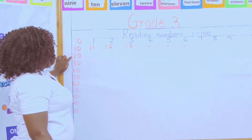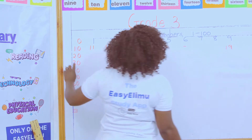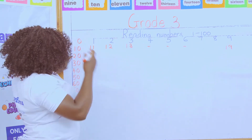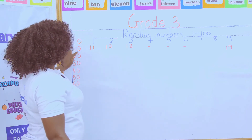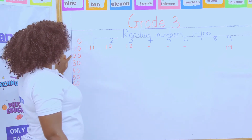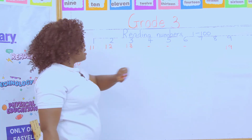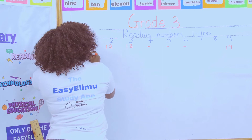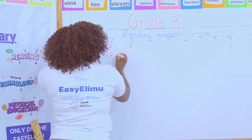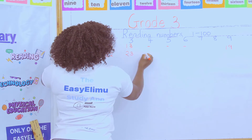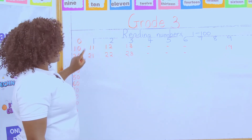We have now reached 20 — remember the last number in the tens row was 19. So after 19 you come to 20. All the numbers in the 20s will be 20 plus the main number: 20 plus 1 gives us 21, 20 plus 2 gives 22, 20 plus 3 gives 23. Then fill in the remaining numbers.